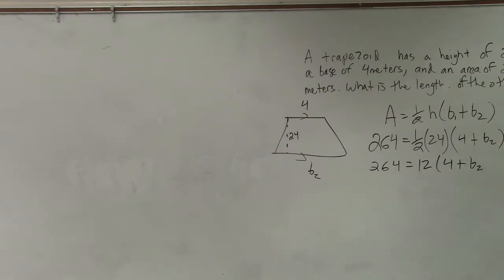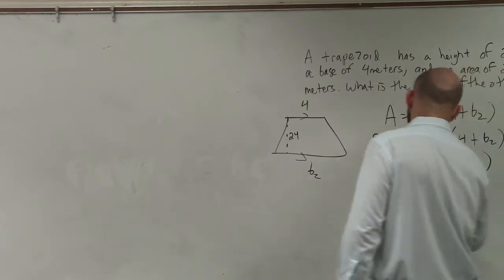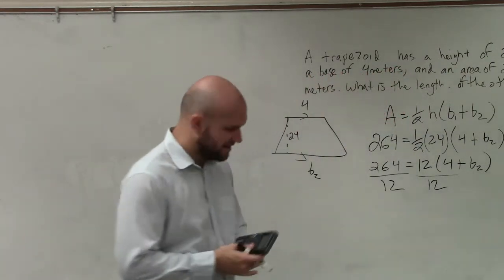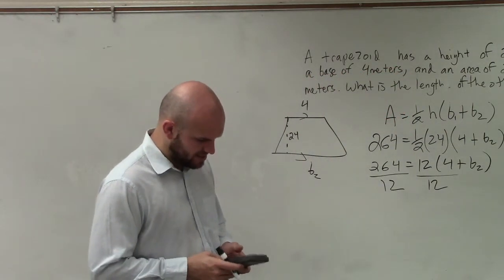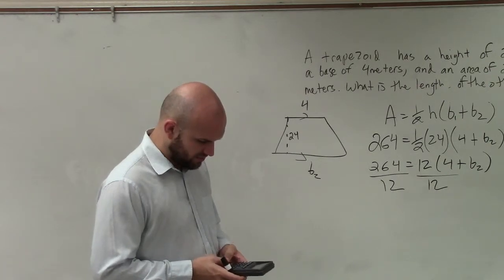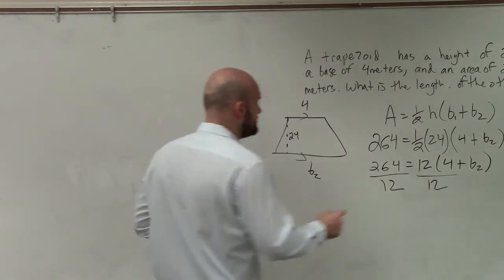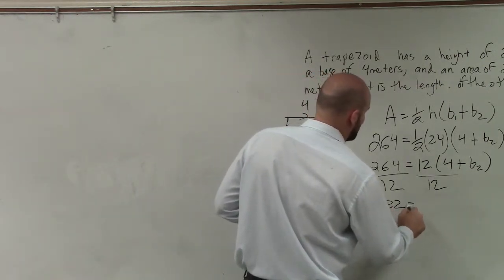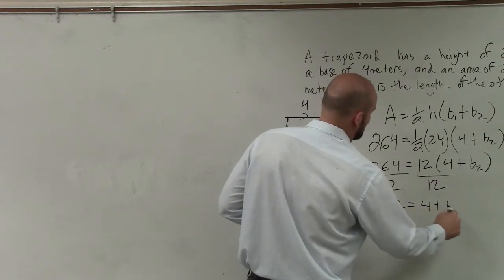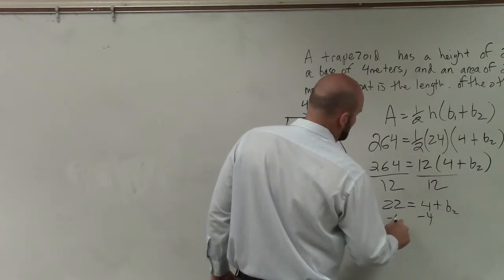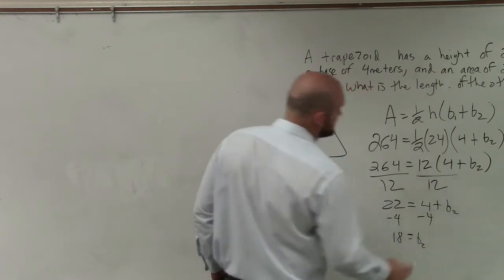Now you can do this a couple different ways. You could distribute the 12 or you could just divide that 12 out, which I'll do. Let's divide by 12. 264 divided by 12, I don't know off the top of my head. 264 divided by 12 is 22. So I have 22 equals 4 plus B2. Subtract 4, subtract 4. 18 equals B2.